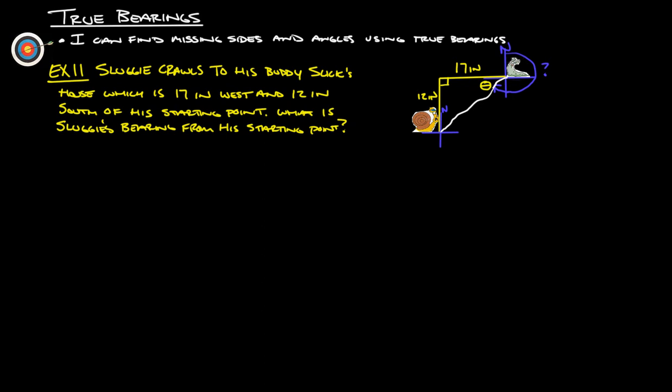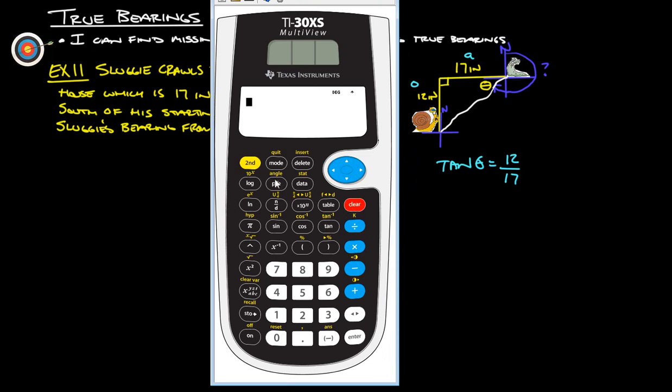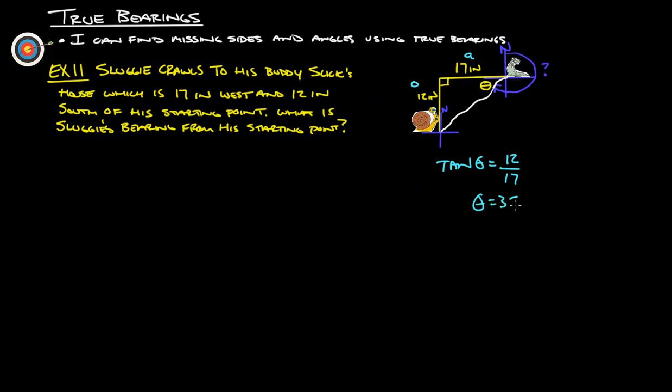From this angle, this is the opposite side. This is opposite, and then this is adjacent. Opposite and adjacent is tangent. So tangent of theta is opposite, which is 12, over adjacent, which is 17. We'll get our calculator out to help us figure out what that measure is.